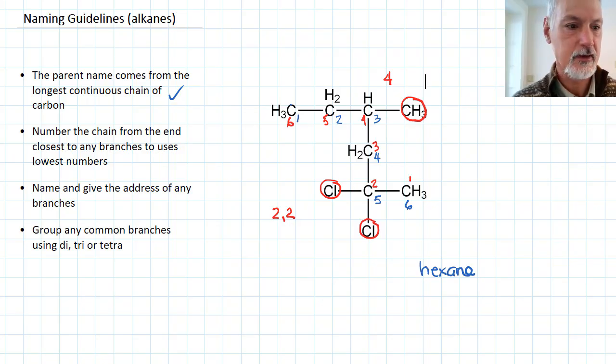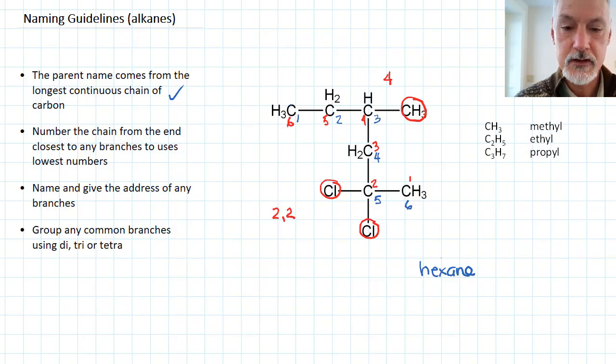And here quickly is some of the branches that are fairly common in organic chemistry. There are some carbon branches: methyl, ethyl, and propyl, depending on the length of the branch of carbons in the chain. And also we can have halogens coming off: fluorine, chlorine, or bromine.